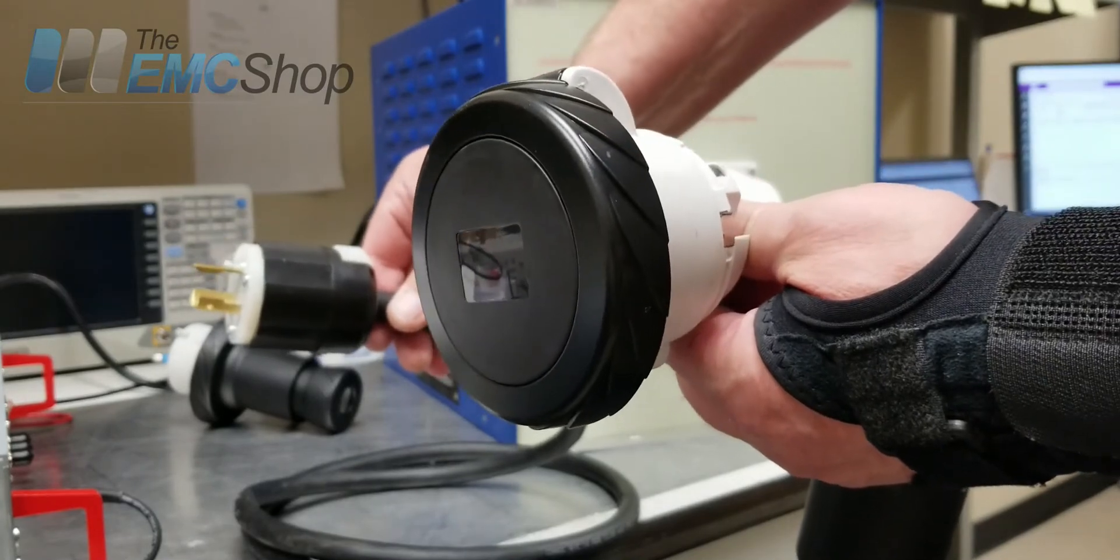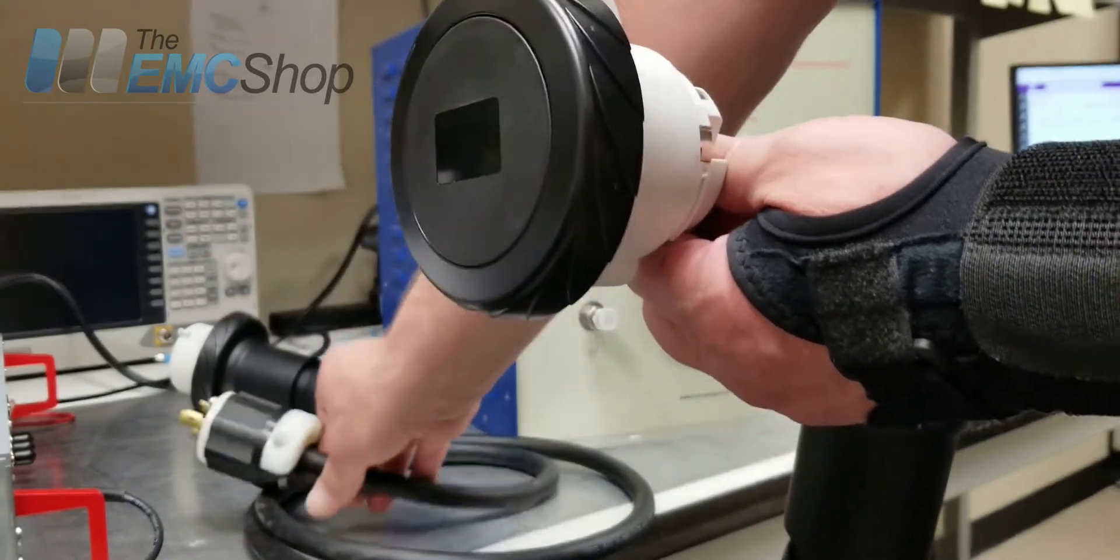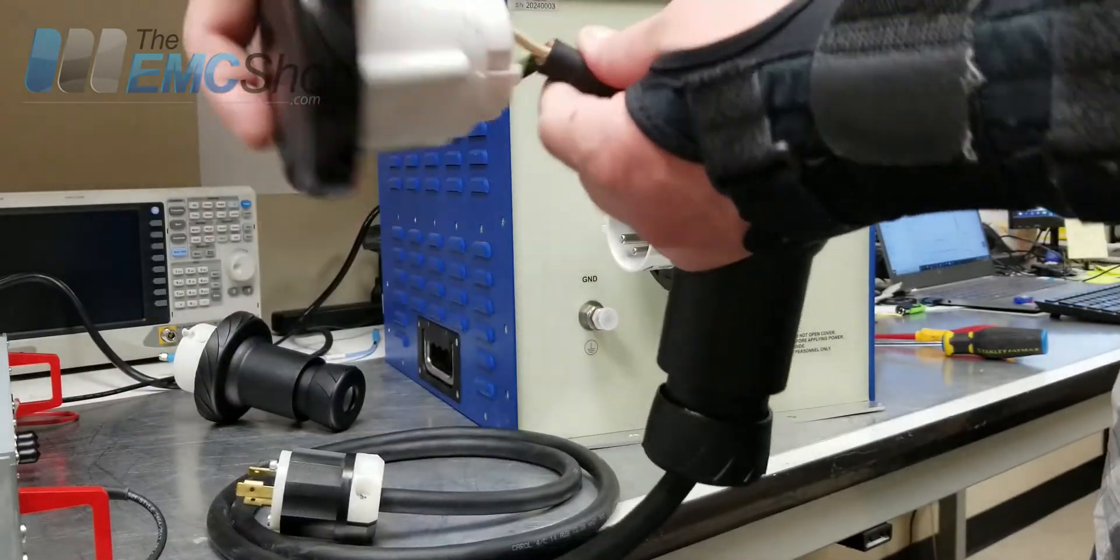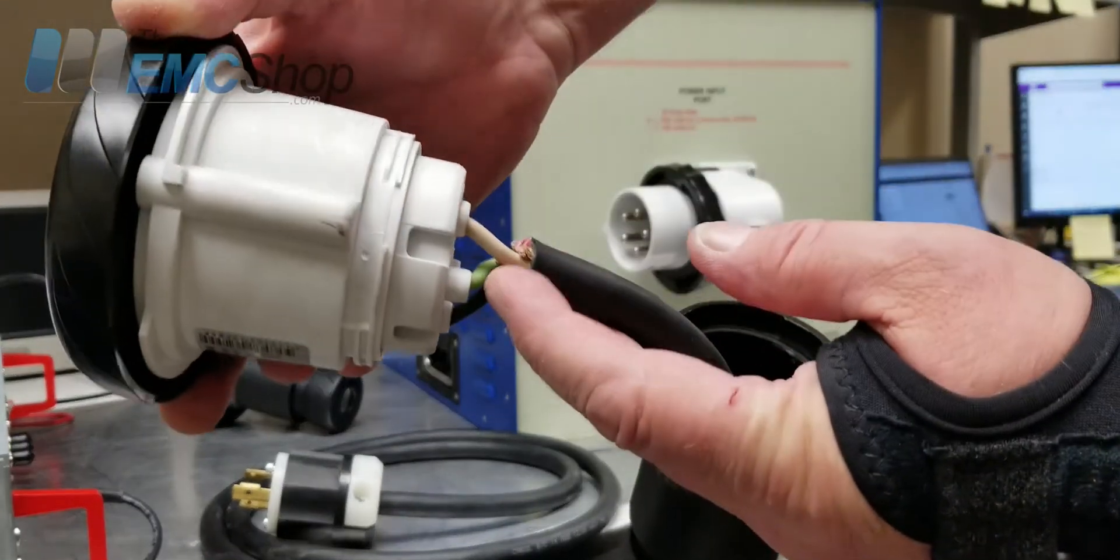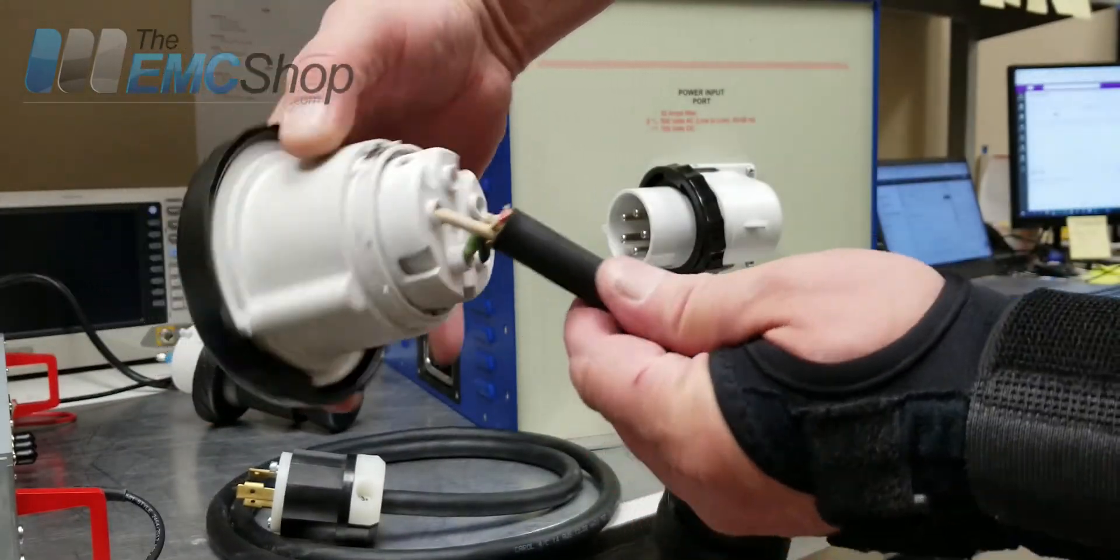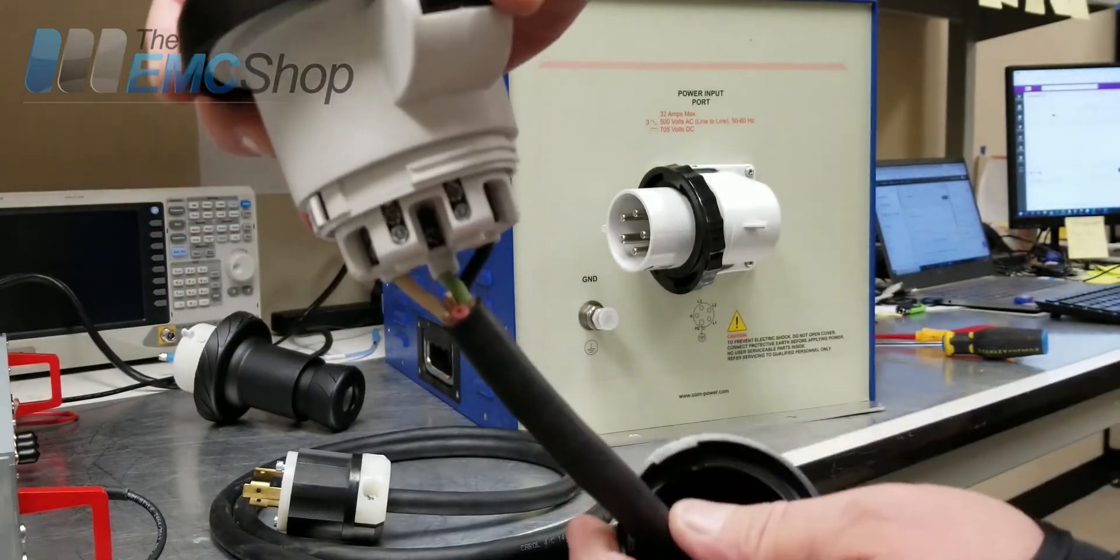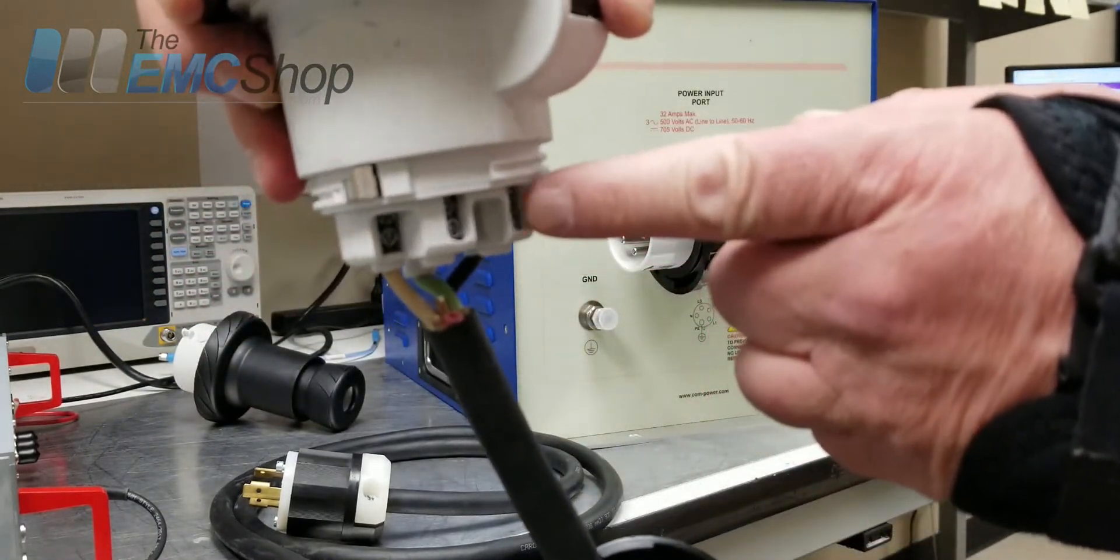It will be going through the LISN to your device. You feed the other end into here, strip your wires, and make sure they're tinned before you connect them. Each terminal has two screws.